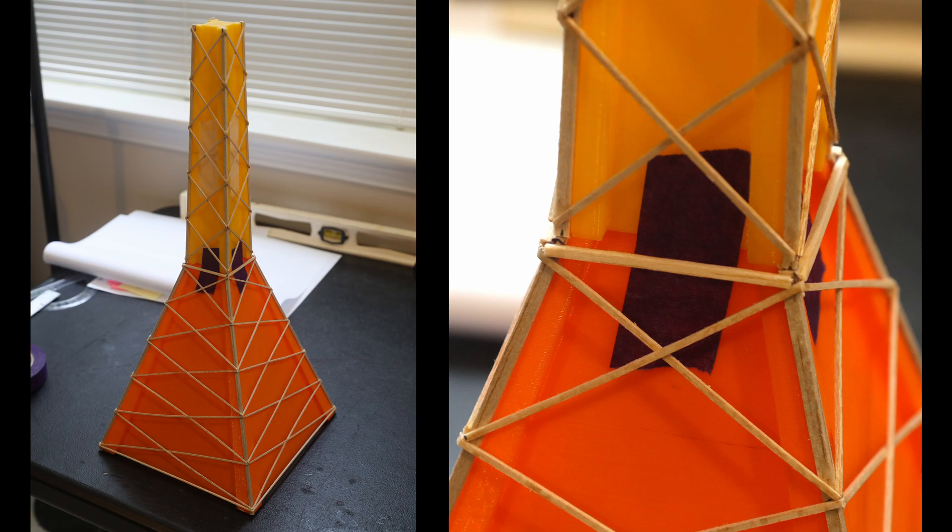It still might take some experimentation to figure out the best way to apply the glue at those joints, but this process should make sure everything stays aligned. That interface joint really shouldn't need a lot of glue if done correctly, and your tower is level.